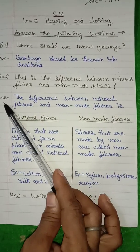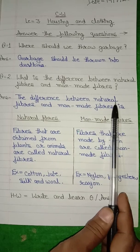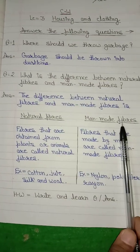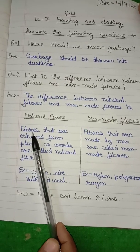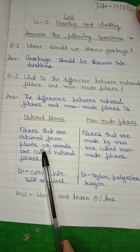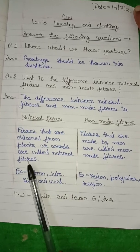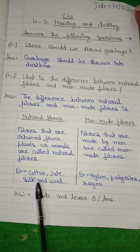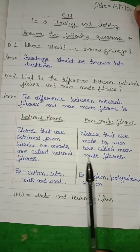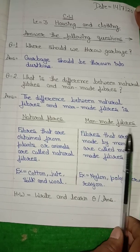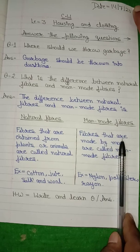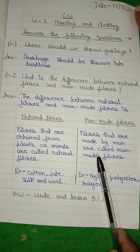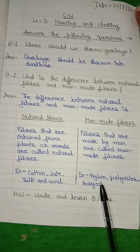Now, the answer. The difference between natural fibers and man-made fibers: For natural fibers, you will write — fibers that are obtained from plants or animals are called natural fibers. Examples: cotton, jute, silk, and wool. On the other hand, for man-made fibers, you will write — fibers that are made by man are called man-made fibers. Examples: nylon, polyester, and rayon.